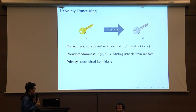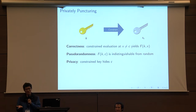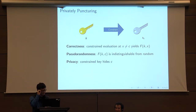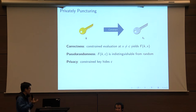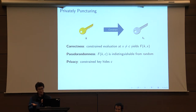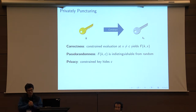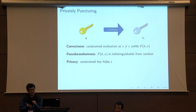For privacy, we require that the puncture key not leak any information about the puncture point c. So why is this an interesting notion? There are a number of applications — many are highlighted in the original BLW paper that introduced the notion. For this talk, I'll discuss one particular application.